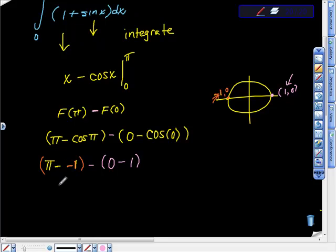So we're going to do this. We're going to get pi plus 1, so pi plus 1. I'm going to distribute this negative sign to here and here. That gives us plus 1, so 2 plus pi is this area we're looking for. All right?